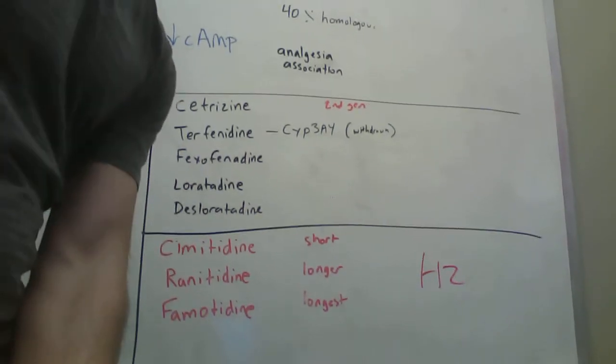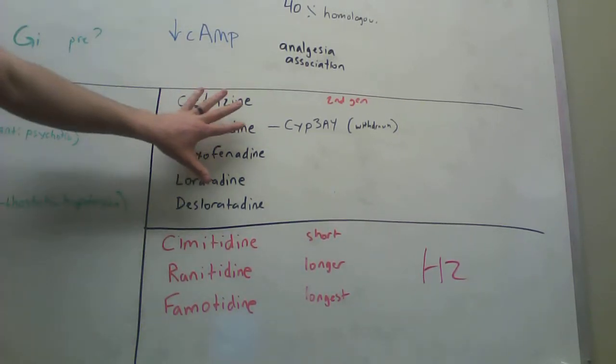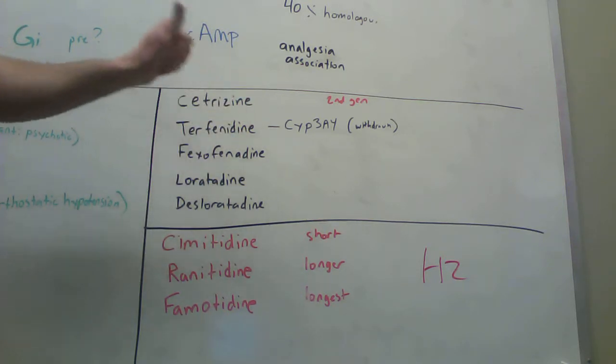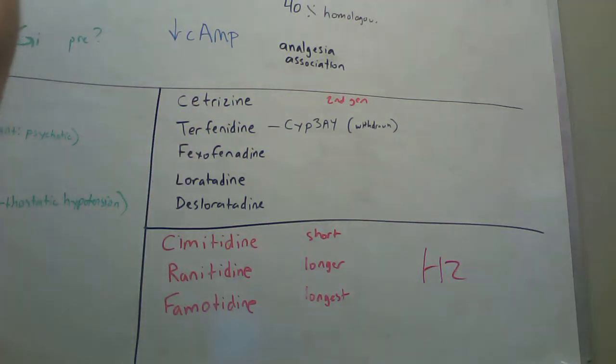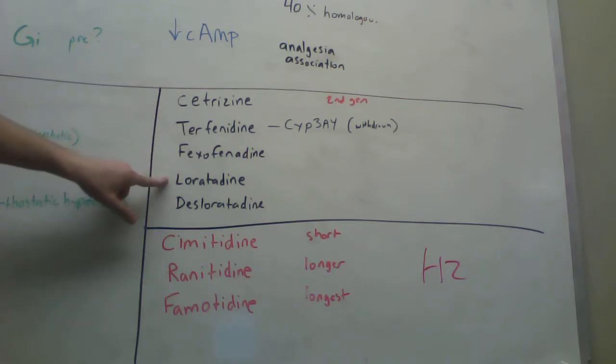Running over here, we have second generation. Second generation means they do not pass the blood-brain barrier as easily. Second generation H1 blockers or antihistamines. So we have cetirizine, terfenadine, fexofenadine, loratadine, and desloratadine. Something that's kind of nice about these is that these two guys, fenadine fenadine, loratadine loratadine.